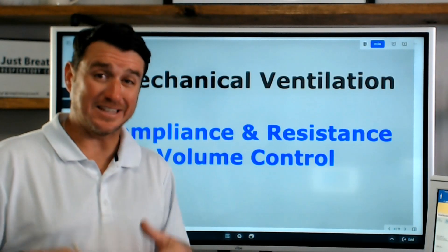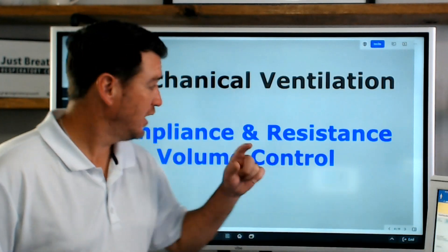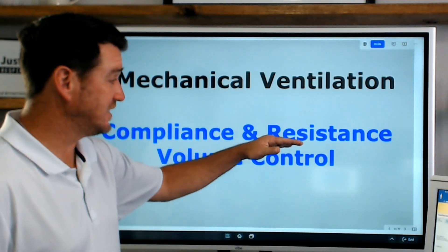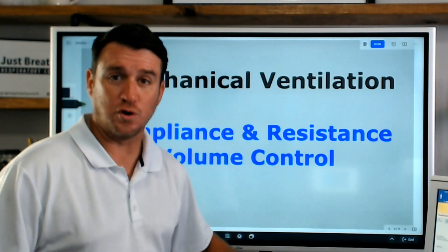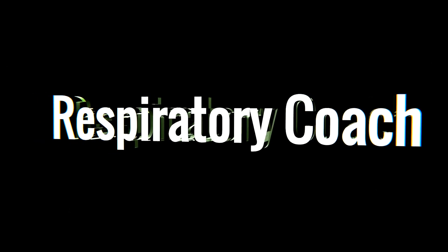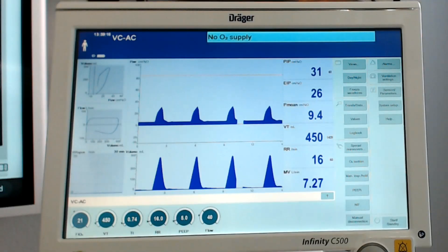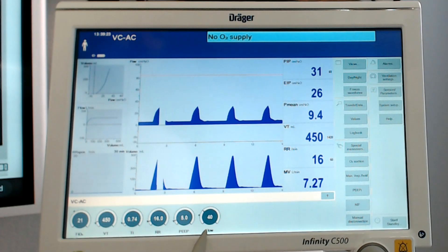What's up future respiratory therapist! In this video, we're going to be using the Draeger ventilator to look at compliance and resistance and how that affects parameters in volume control ventilation. Let's dive in. So we're here in volume control. We have a set tidal volume of 450 milliliters, a flow of 40 liters per minute, a PEEP of five, and a rate of 16.